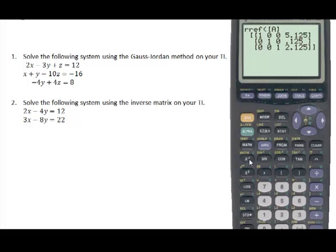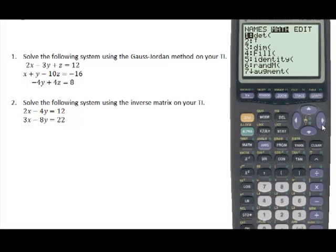We're going to edit those matrices. I'm going to go to second matrix. We're going to edit. I'm going to edit A. Now I want a 2 by 2. A 2 by 2 because it's for my coefficients over here.